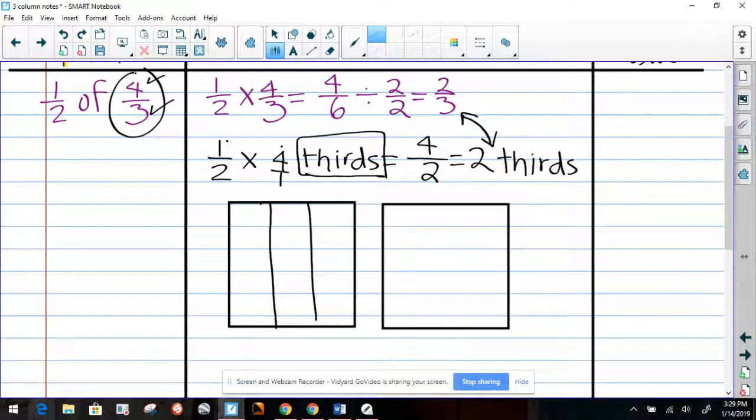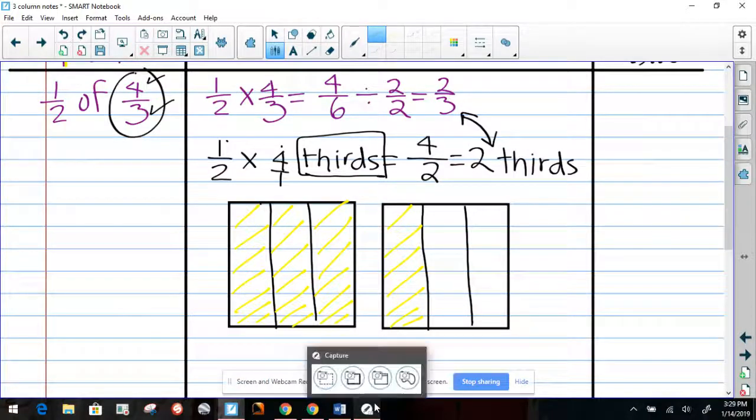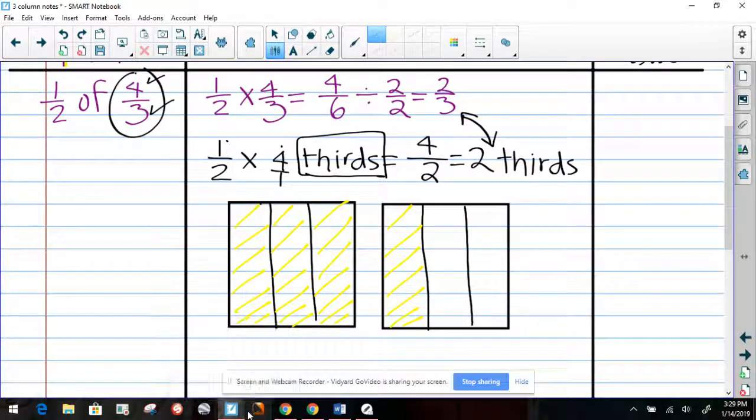But this four says that I have to have four of them, so I need one more model. Now I can color the four thirds. So this is one third, two, and three, and we need one more, so it would be four thirds. Let me label this.